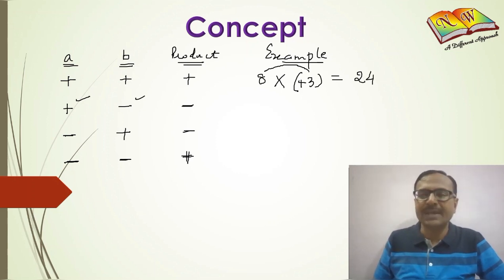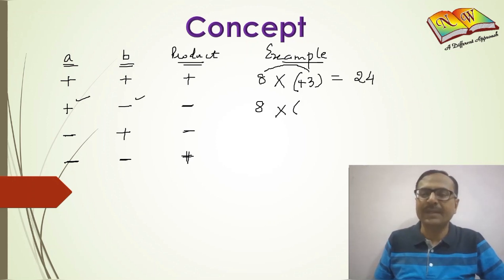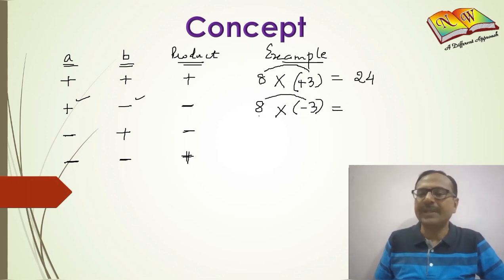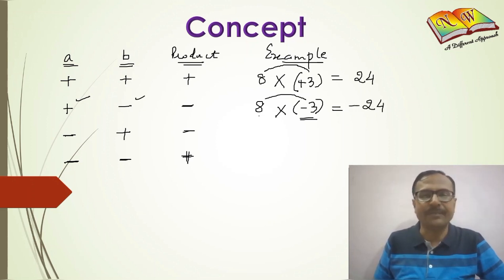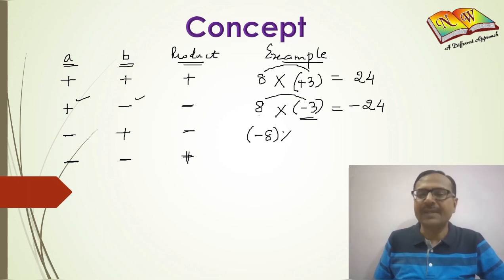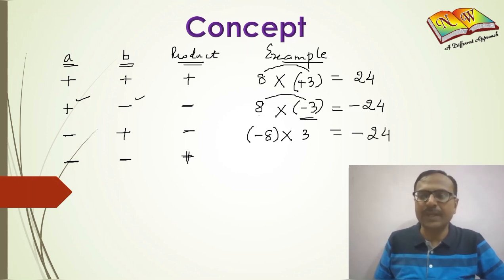But if the first one — 8 — is positive and the second one — 3 — is negative, you still multiply 8 times 3 which is 24, but since one of the integers is negative, you get negative 24 as the answer. Likewise, if the first integer is negative and the second one is positive, the answer remains negative 24.